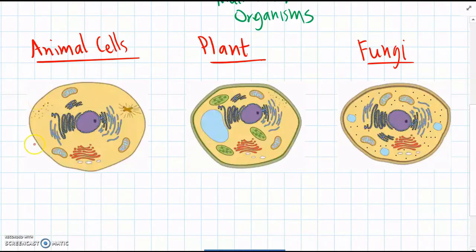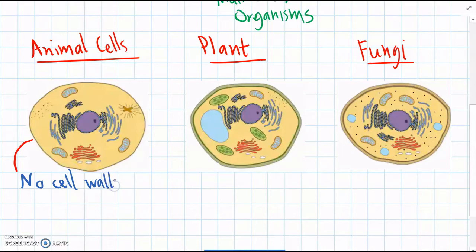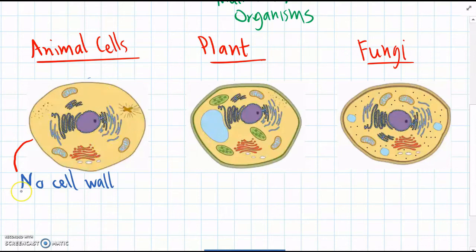Looking at animal cells, straight away we can see that there's no cell wall in animal cells. Animal cells only have a cell membrane. So that means they're not rigid — they're actually quite squishy and they don't hold themselves together.